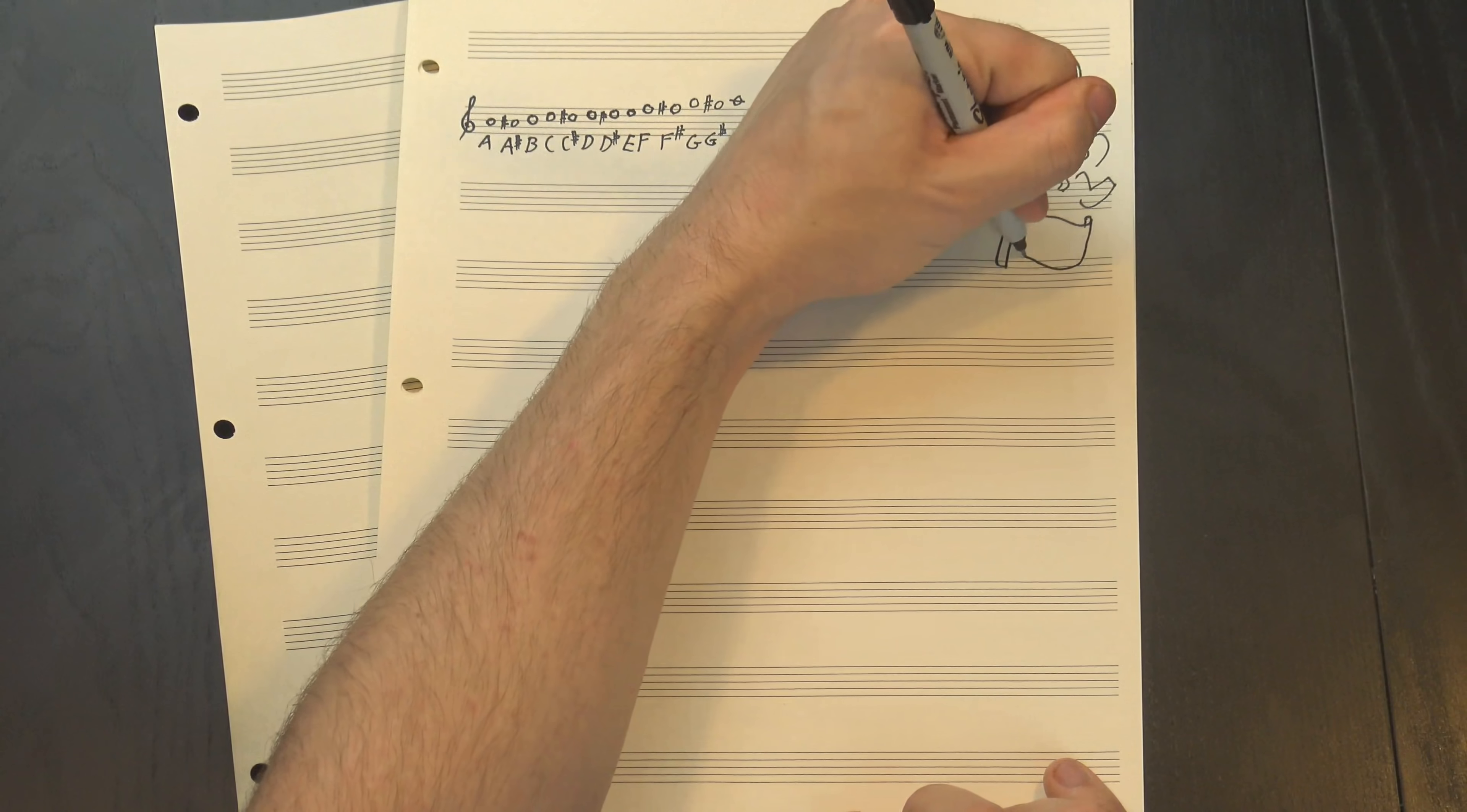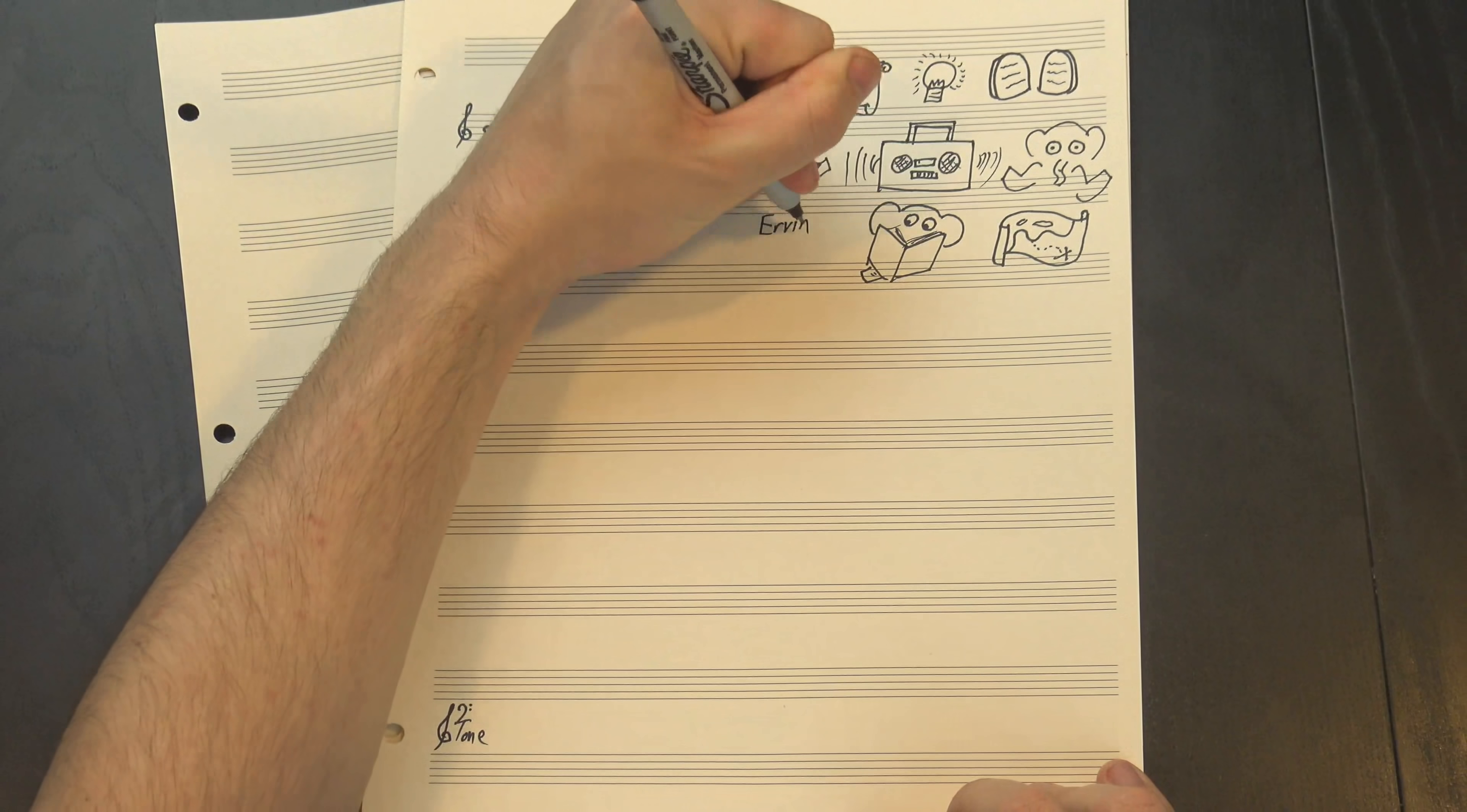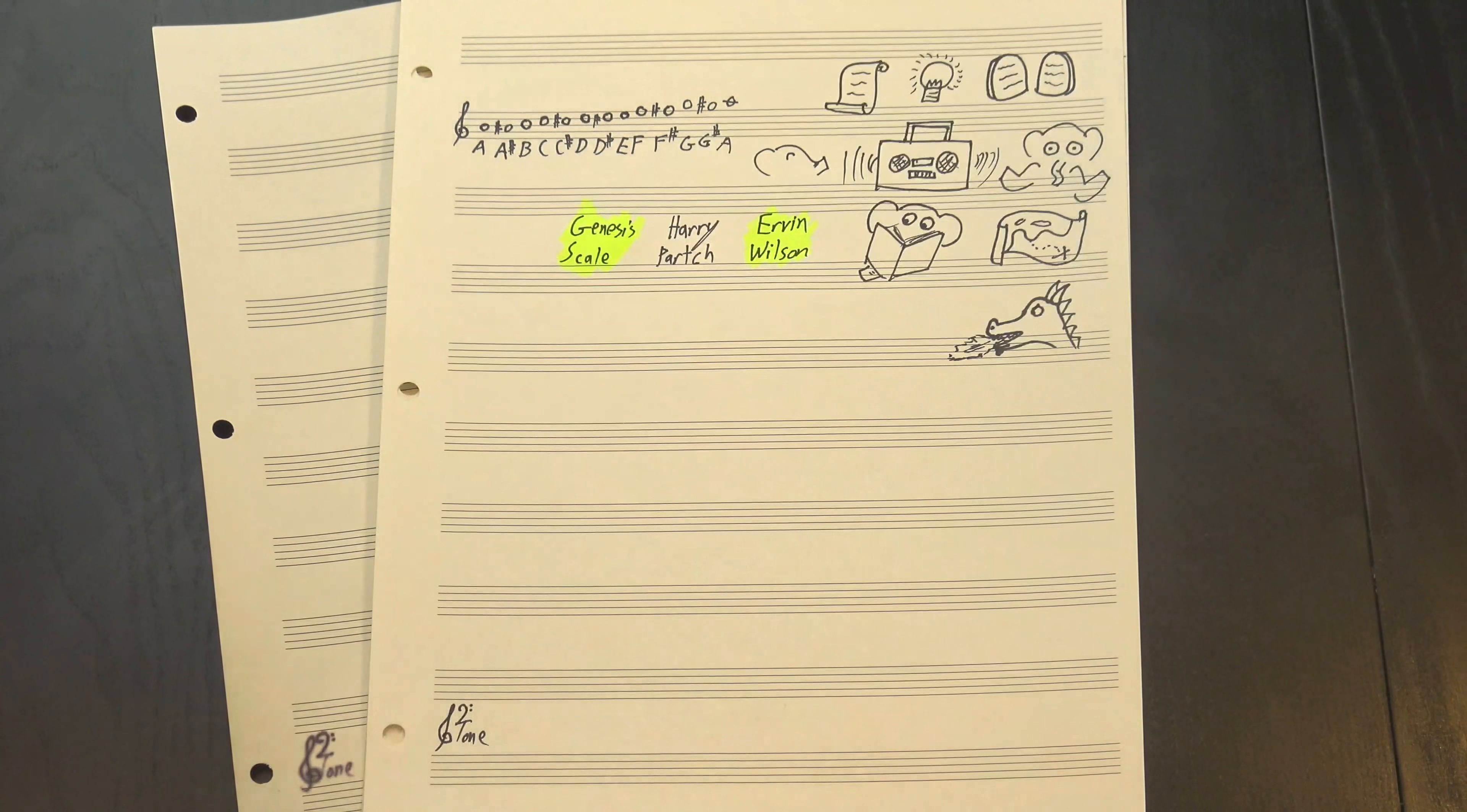But in reality, it's just one of many possible ways to map the tonal space, which is a fancy way of saying we can find different sets of notes if we try. And one person who tried very successfully was a Mexican-American theorist named Irvin Wilson. Wilson was a longtime associate of Harry Parch, inventor of the Genesis Scale, a 43-note monster of a scale designed to demonstrate Parch's ideas about tonality.